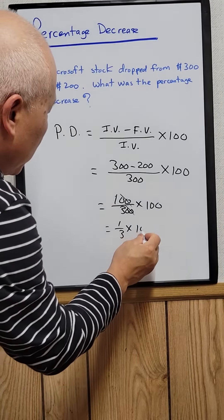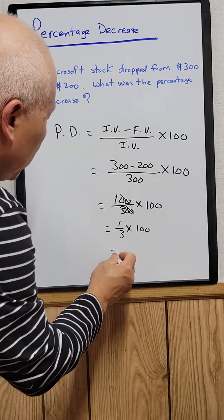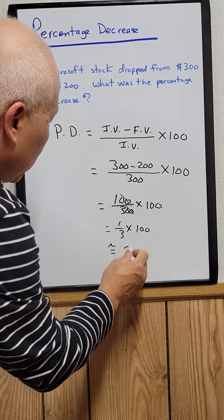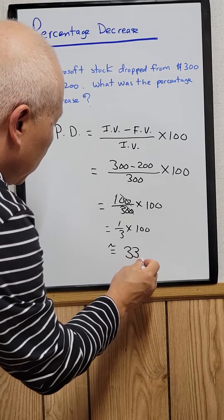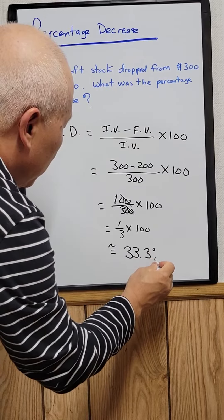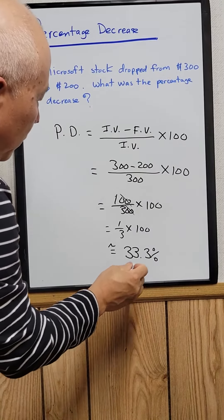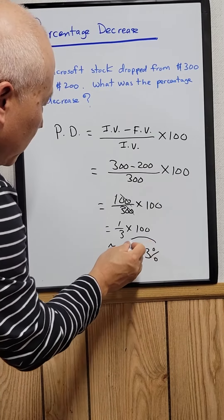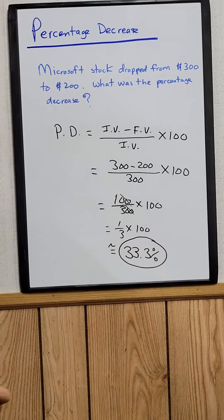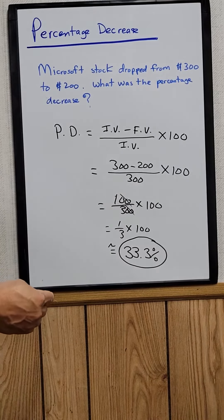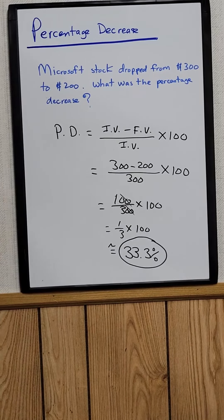So one-third times 100, which equals approximately 33.3%. So that's the answer. Microsoft stock dropped 33.3%.